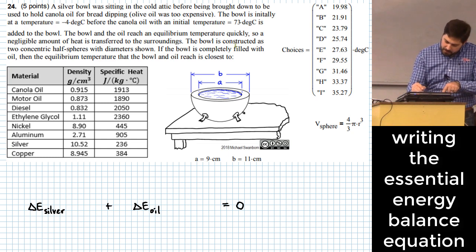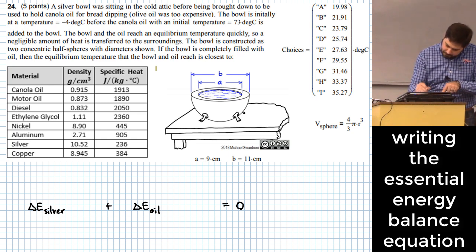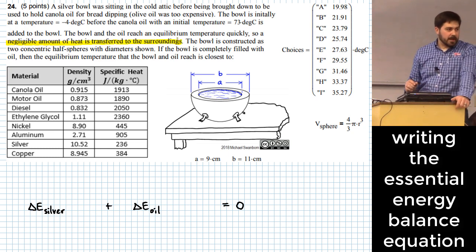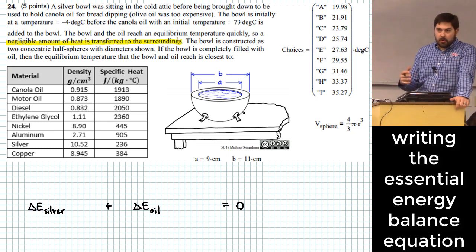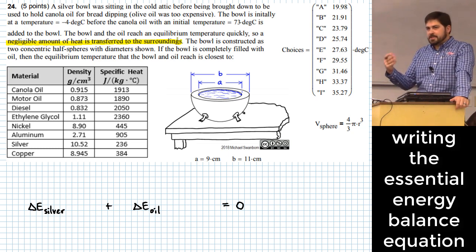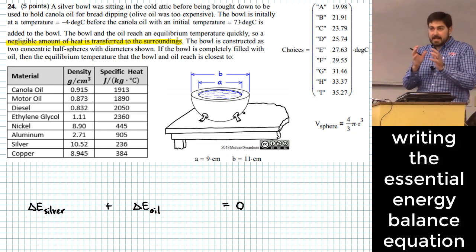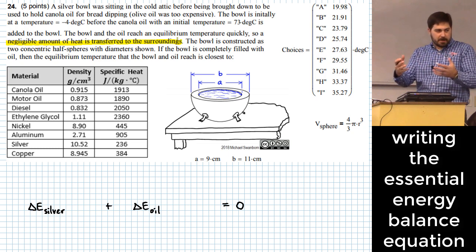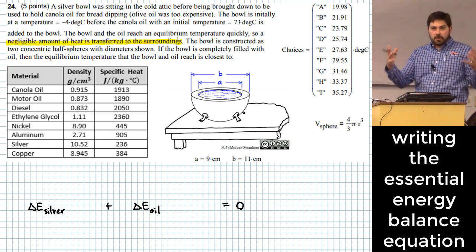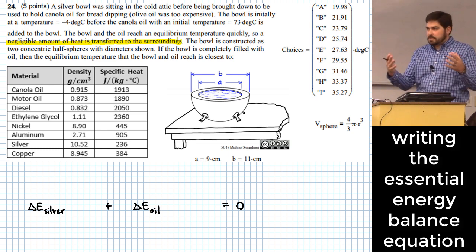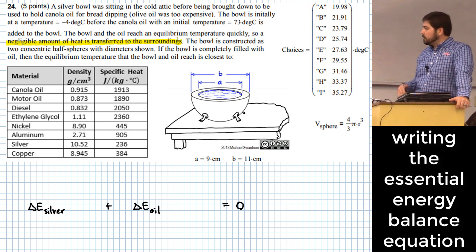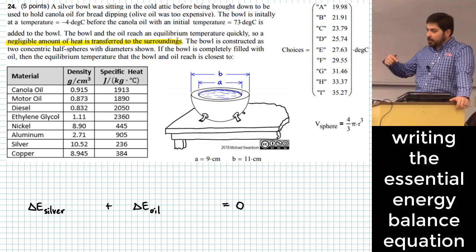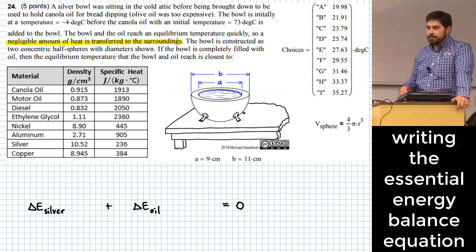It says that a negligible amount of heat is transferred to the surroundings. That means that we're going to assume even though this never happens completely, but we'll just say a negligible amount, meaning we can assume it's zero, gets moved out of the system. So any changes in internal energy has to happen through the change in temperature of the oil and the change in temperature of the silver.